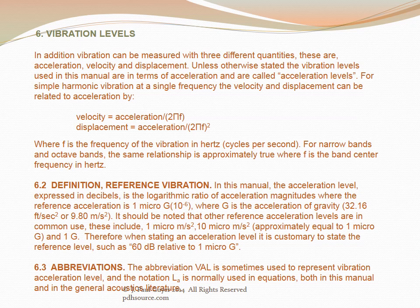For simple harmonic vibration at a single frequency, velocity and displacement can be related to acceleration by: velocity = acceleration / (2πf)², where f is the frequency in hertz. The same relationship approximately holds for narrow and octave bands using the band center frequency. The acceleration level in dB uses a reference of 1 micro-g (10⁻⁶ g), where g = 32.16 ft/s². The abbreviation VAL or L_A is used for vibration acceleration level.